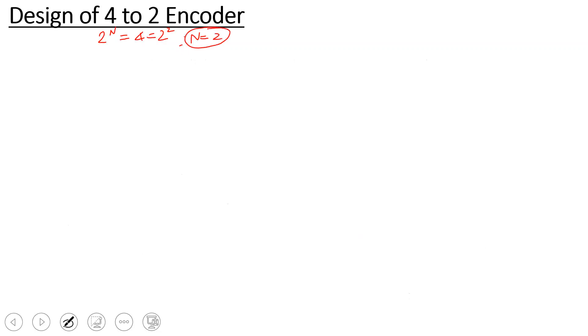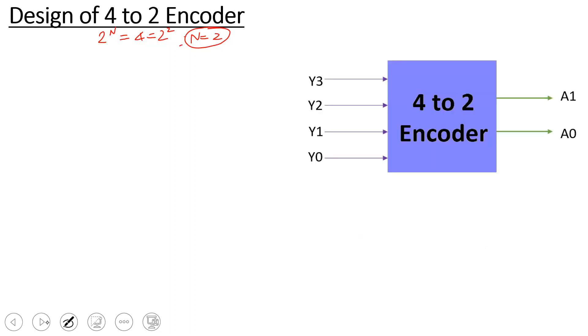So for a 4-to-2 encoder, we have 2-power-n input lines. Since the input count is 4, and 4 equals 2-squared, n equals 2. So there are 4 inputs: Y3, Y2, Y1, Y0, and 2 outputs: A1 and A0.